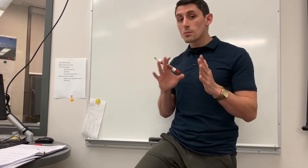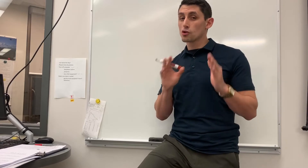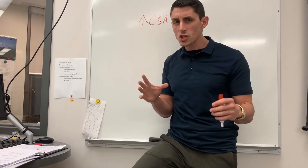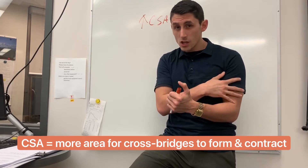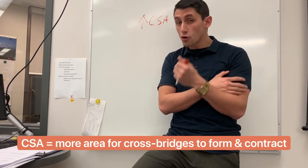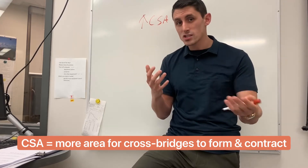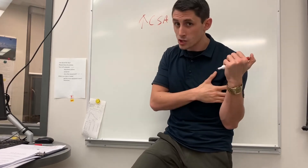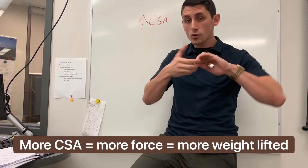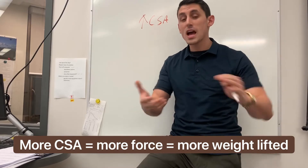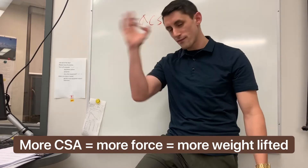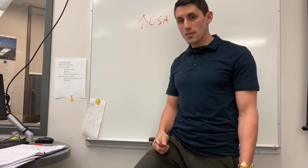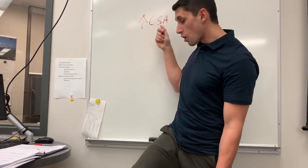One of the most important adaptations is an increase in what's called cross-sectional area, or CSA. Cross-sectional area is the area in the muscle — the deep physiological cellular parts — where we're making what's called cross bridges. That's how your muscle contracts: you have an actin filament and a myosin filament, they come together to make a cross bridge, they pull on each other, and that's what contracts your muscle. The more cross bridges you have, the more cross-sectional area you have, the more force you can generate, the more weight you can lift, the faster you can go.